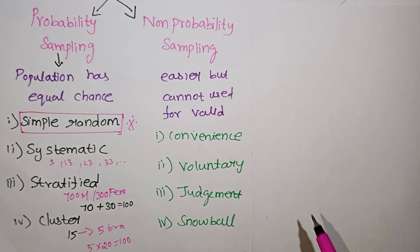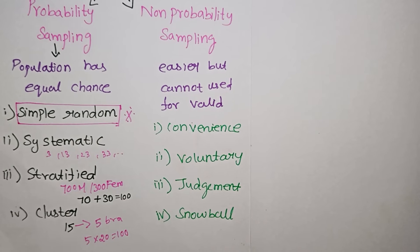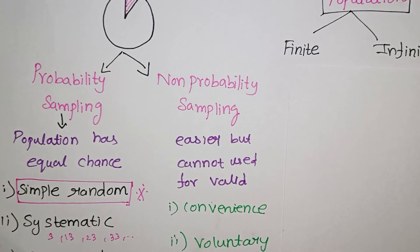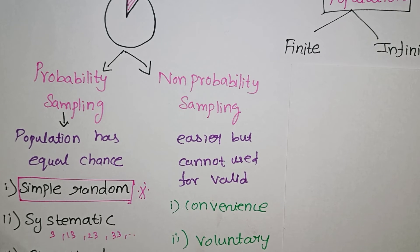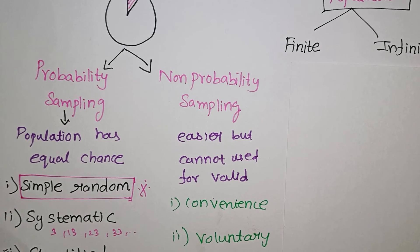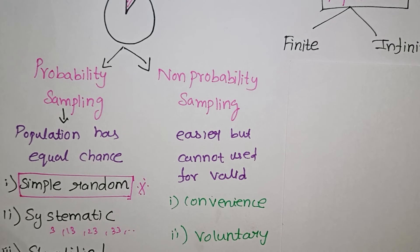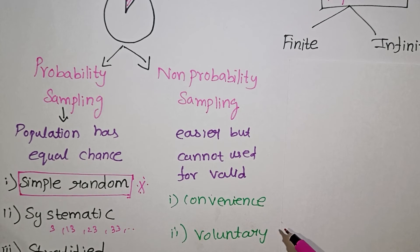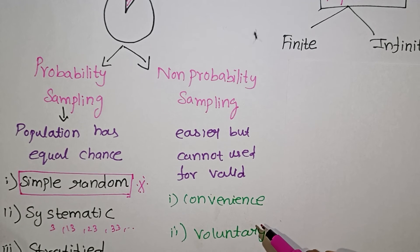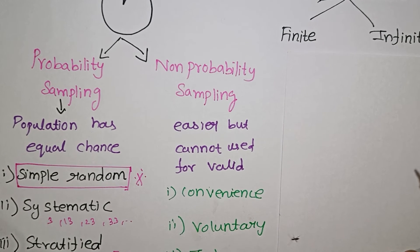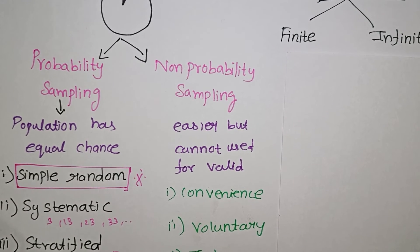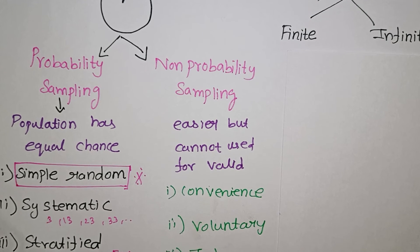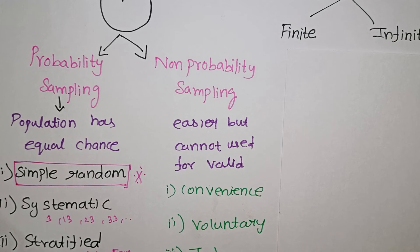Convenience sampling: for example, a school, college, or university student living in a hostel. You can find any student nearby for a survey — it is convenient to collect that data. That is convenience sampling.